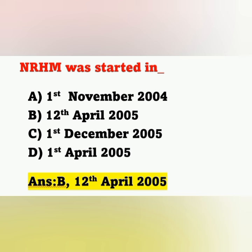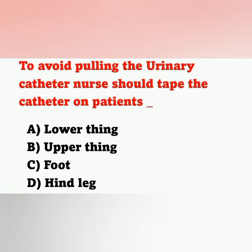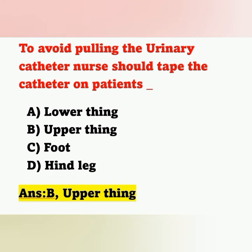To avoid pulling the urinary catheter, the nurse should tape the catheter on the patient's — options: A: lower thigh, B: upper thigh, C: foot, D: hand leg. The correct answer is option B, upper thigh.